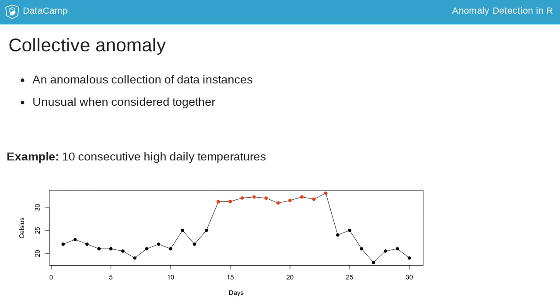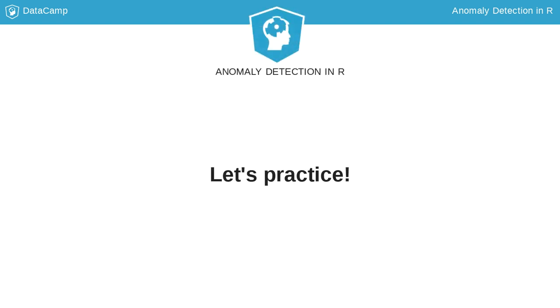Collective anomalies are particularly important in studies over time, where events can cause several data points to appear anomalous at the same time.